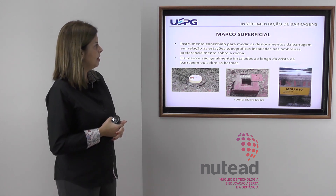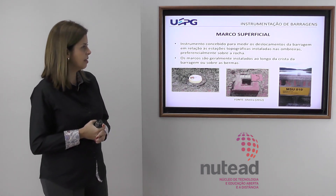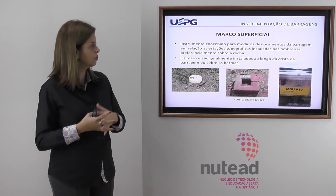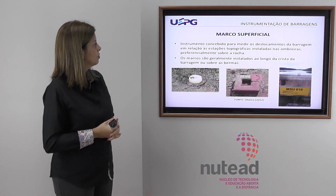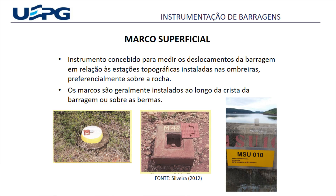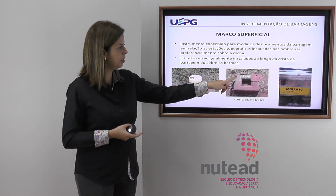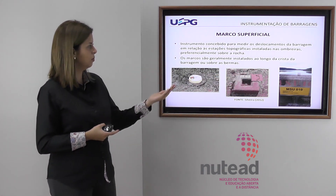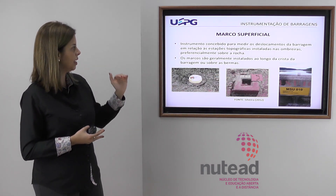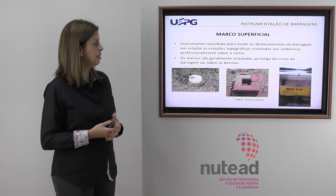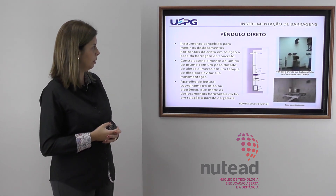Os marcos superficiais são utilizados para medir os deslocamentos da barragem em relação a estações topográficas instaladas nas ombreiras, preferencialmente sobre rocha. São geralmente instalados ao longo da crista da barragem ou sobre as bermas. Com o levantamento topográfico, consegue-se perceber se esses marcos mudaram de posição.